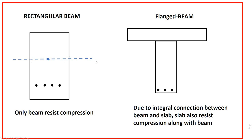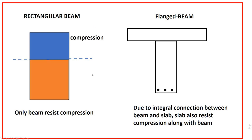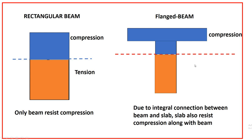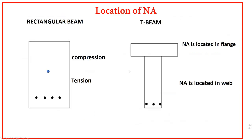In a rectangular beam, above the neutral axis there is compression and below the neutral axis there is tension. Similarly, in a flange beam, above the neutral axis there is compression and below the neutral axis there is tension. Here you can see the slab is also in compression — meaning the slab takes part in resisting compression. This is the basic difference between rectangular beam and flange beam.